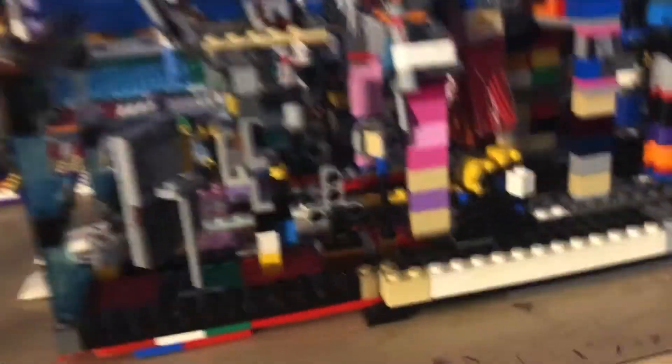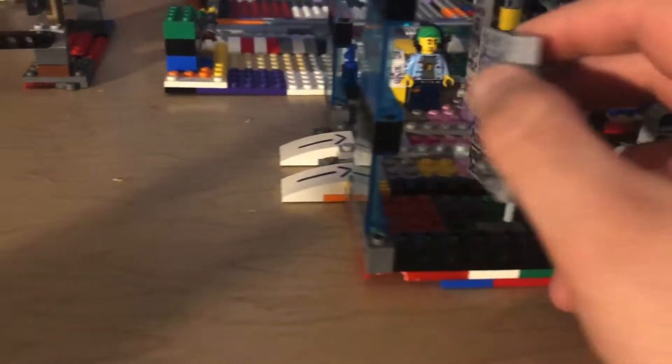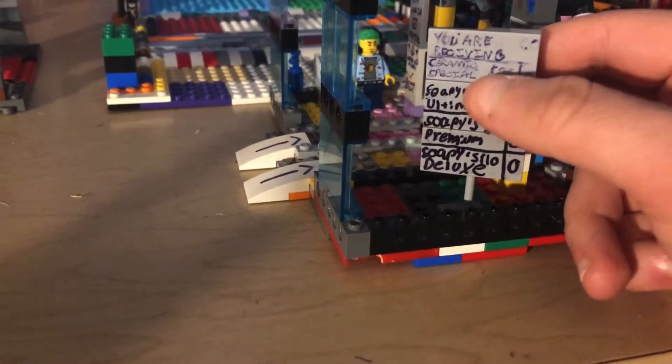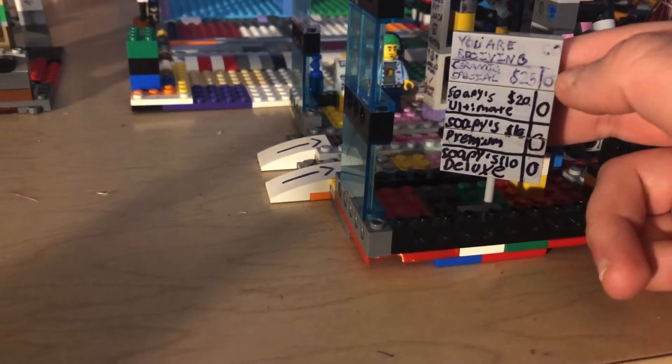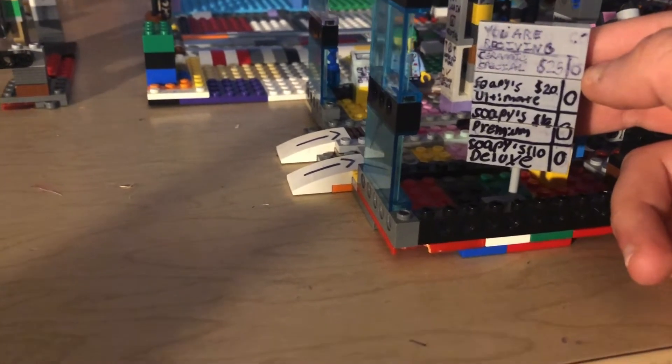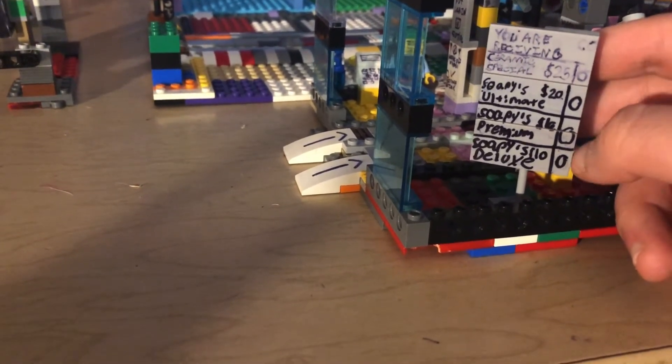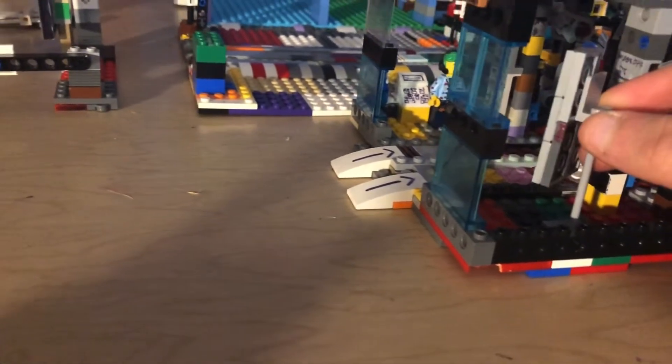So here's the wash tunnel. We have this sign right here that tells you exactly which wash you're getting. So if you're getting the $25 ceramic special, it'll start flashing and so on and so forth to go on with all the other washes. The camera here watches the pay area to make sure everyone's doing their job.